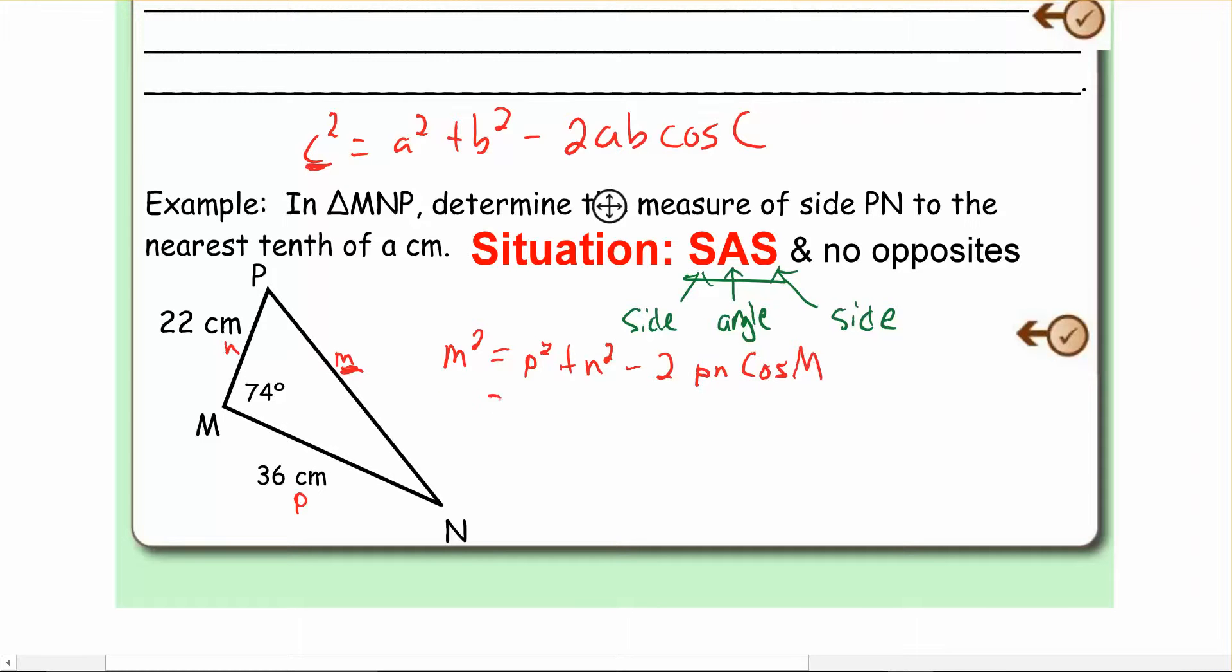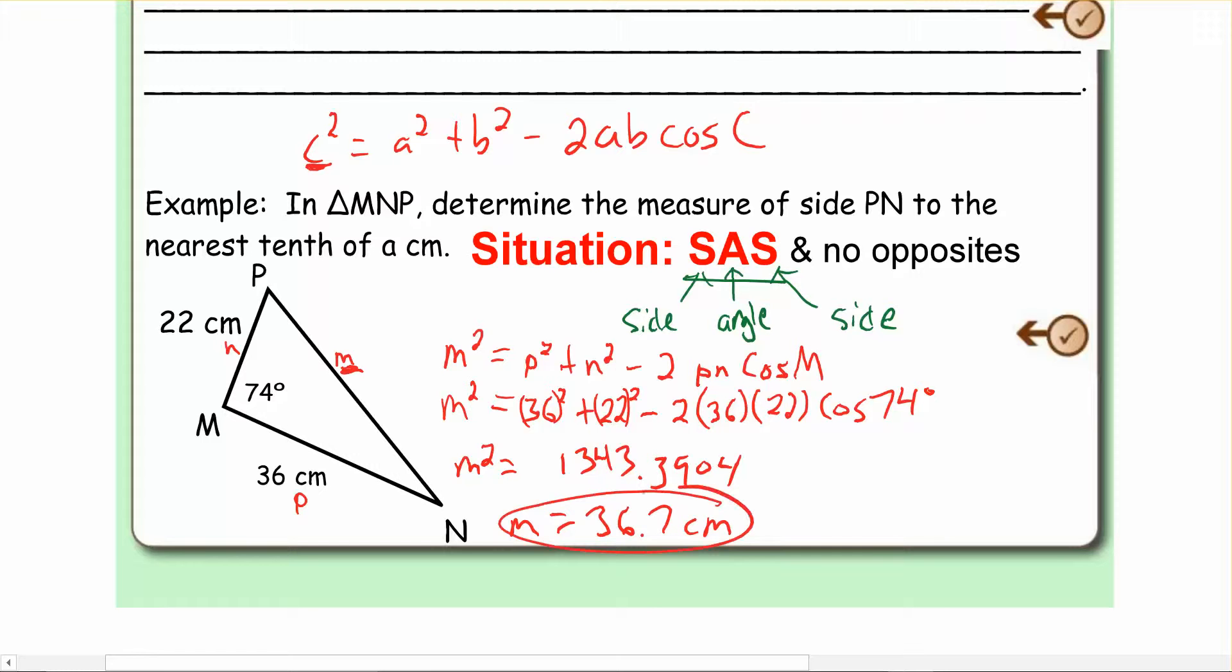So if you fill that in, you get all of this. Make sure you guys just try putting this all in. The only thing I'm thinking is that you might make a mistake just with your order of operations or something, like if you put in your calculator wrong. So make sure you're able to put this in your calculator. If you can't, come see me and figure out what's happening. But if you put that on your calculator, you end up getting 1,343.3904. Then what we've got to do is just take the square root of that. So m in the end would just be equal to 36.7 centimeters.